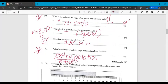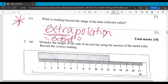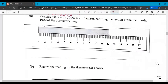All right. That's number one. Number two, just a measurement problem. Measure the length of the side of an iron bar using the section of the meter ruler and record the correct reading. So you're literally going to read from the end of the ruler. So that's one. And then you're going to come down. So this is in centimeters. So that goes 12, 12.1, 12.2. So 12.2 centimeters is our reading there. Easy peasy. Moving right along.